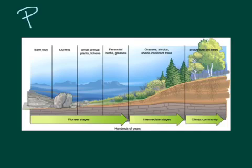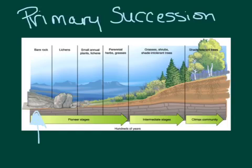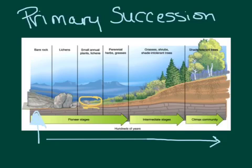This picture is demonstrating primary succession. Primary succession occurs when you're starting off with an area that is bare rock. Some examples of when you might get bare rock would be lava cooling, such as when the Hawaiian Islands formed, or an abandoned parking lot. Over hundreds and hundreds of years, everything changes — the bare rock gets replaced by lichen, and in addition to plants growing we also get soil forming.